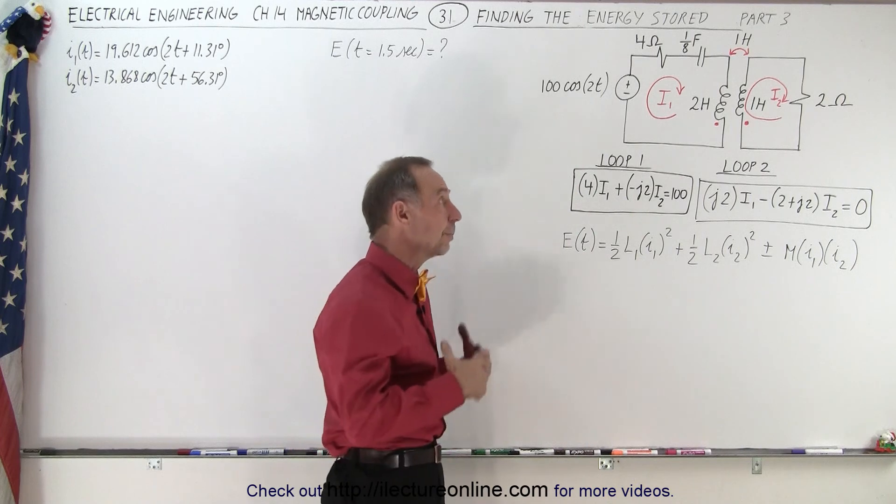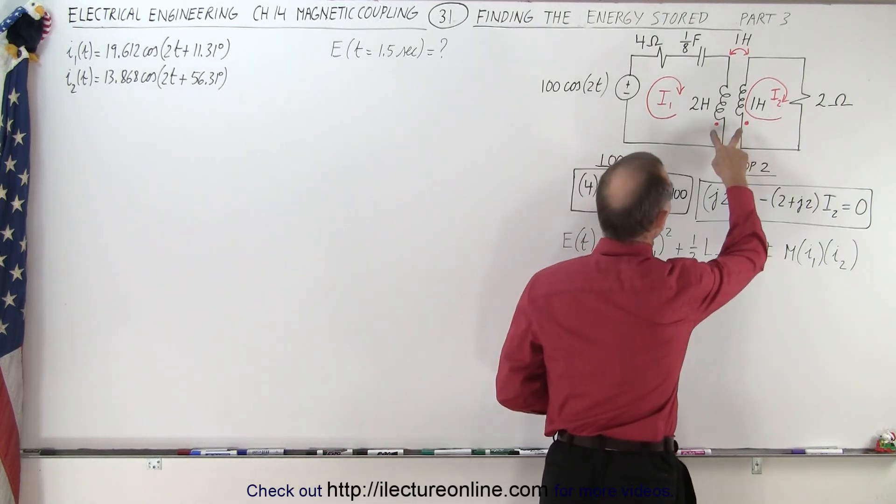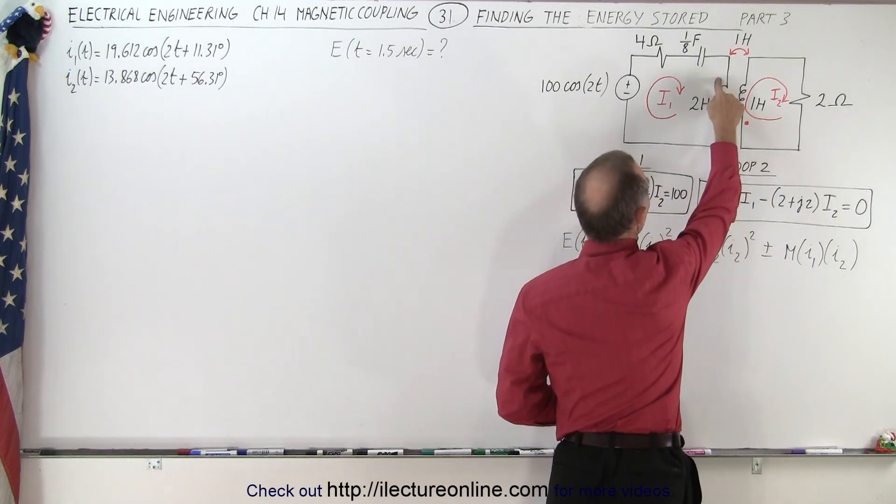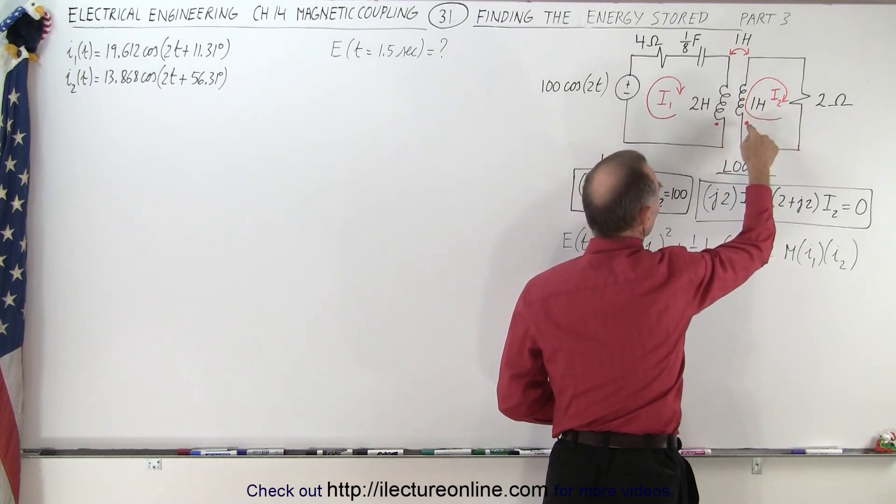Now why is it plus or minus? Well it depends how the currents flow through the inductor, whether or not they both go through the same dot point of the inductor or if one is on the opposite side.